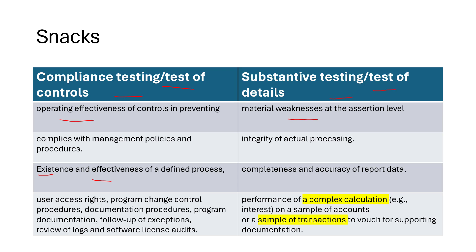Any question with a keyword about existence and effectiveness of a defined process — such as absence and presence of a change management procedure — is a compliance test. Checking whether results are complete, accurate, or producing the same output is a substantive test. User access rights, program change control logs, and audits are part of compliance testing. Sampling complex calculations or transactions is part of substantive testing. Reviewing firewall settings for effectiveness is compliance testing.